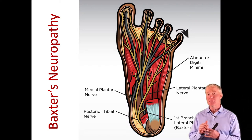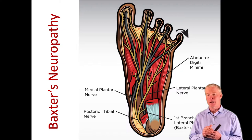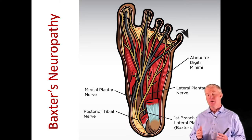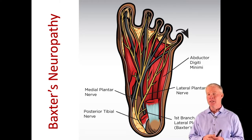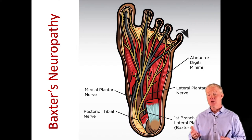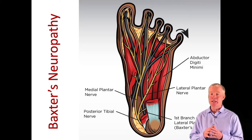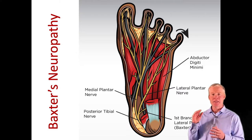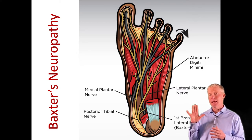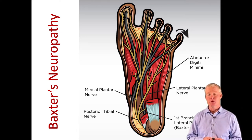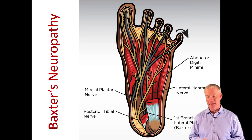The one test particularly useful for identifying Baxter's neuropathy is having the patient abduct all five toes. If they're unable to abduct their little toe, that means there's potentially weakness in the abductor digiti minimi, which is supplied by that first branch of the lateral plantar nerve. In a heel pain patient who has not improved after four or five visits, have them spread their toes — if they can't abduct the digit, look for irritation of the posterior tibial nerve and the lateral plantar nerve.